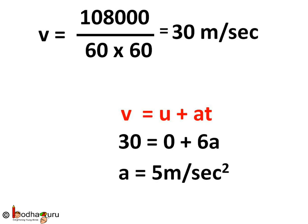We can easily use v is equal to u plus at to find a. Replacing the values, 30 is equal to 0 plus 6a. So a is equal to 30 by 6 which is equal to 5 meter per second square. This is a huge acceleration from an automobile perspective.